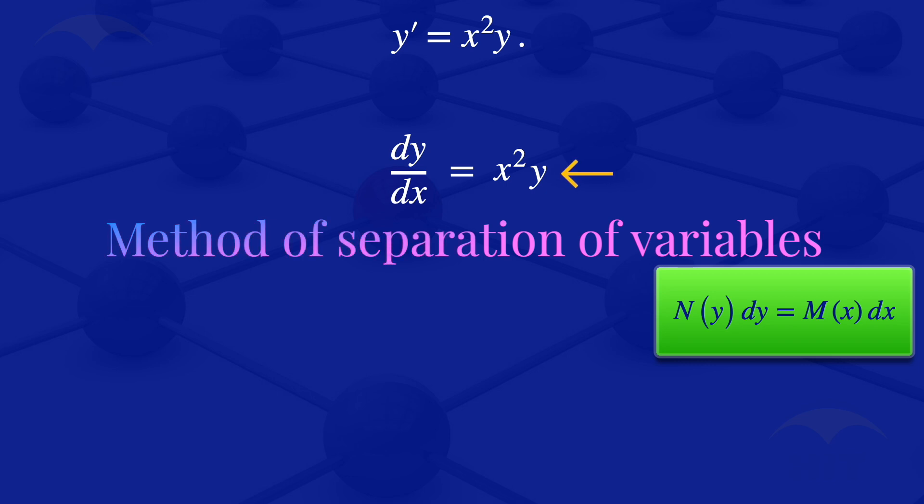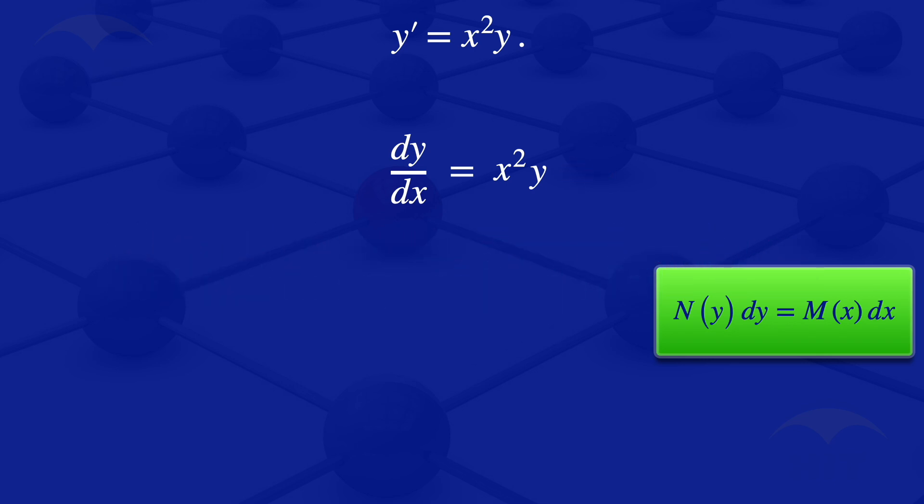So looking at this equation, we can write it in that form, N of Y DY equals M of X DX. So what I'll do is I'll put the variables with Y on the left-hand side, then those with X on the right-hand side, then go on and integrate.